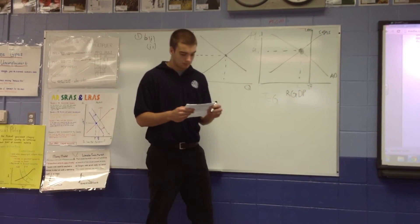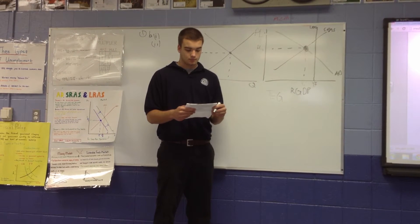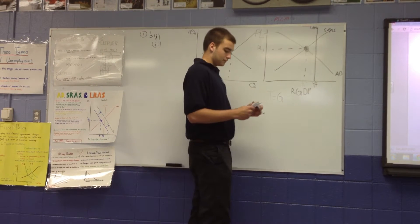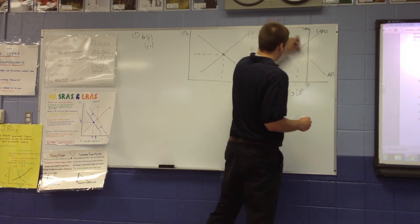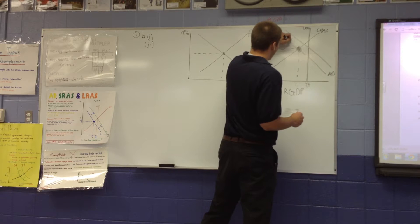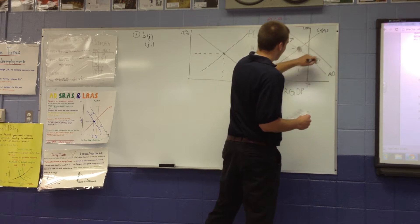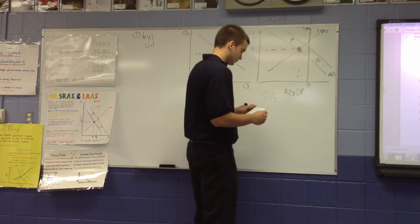Part B. The United States government increases spending on goods and services by $100 billion, which is financed by borrowing. How will the increase in government spending affect each of the following: cyclical unemployment and the natural rate of unemployment.